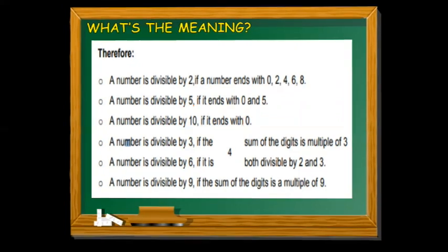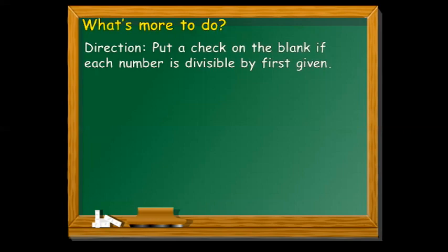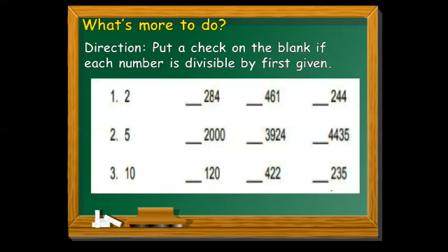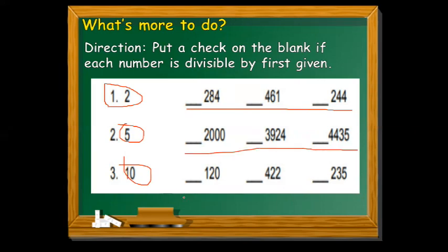So let's have another exercise — What's More. Direction: Put a check on the blank if each number is divisible by the first given number. We have 3 exercises: number 1 is divisibility by 2, number 2 is divisibility by 5, and number 3 is divisibility by 10. We have given numbers to check.